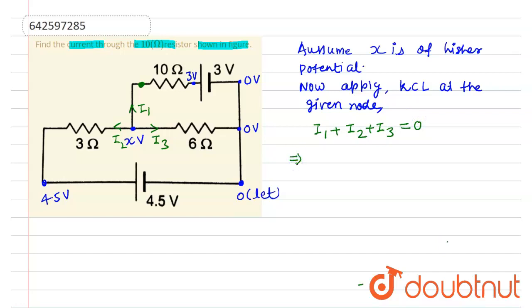i1 should be equals to x minus 3 upon 10, plus i2 should be equals to x minus 4.5 upon 3, plus i3 will be equals to x minus 0 upon 6 equals to 0.